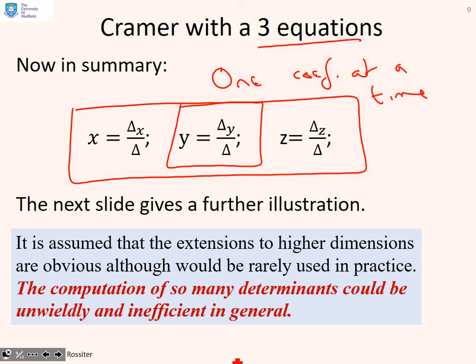It's assumed that extensions to higher dimensions are obvious, but the key point is it would rarely be used in practice. Cramer's rule is certainly good for 2 by 2, perhaps OK for 3 by 3. Once you get to 4 by 4, it would be used rarely and above, I think, hardly ever. Because the computation of determinants is still fairly inefficient, and if you want to get x, y, z, w and so on, you've got too many determinants to do.